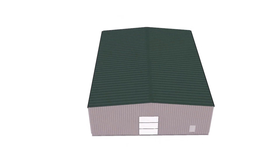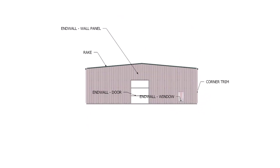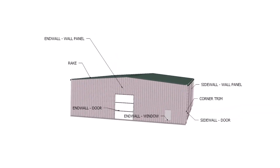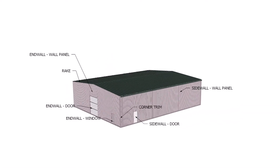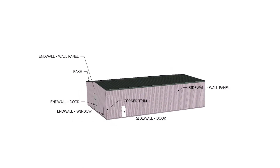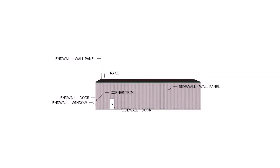Let's start at the end wall of the building. The intersection of the end wall with the gable roof is called the rake. The end walls and side walls are covered with a cladding material, and framed openings are provided for doors and windows that can be placed on any of the walls. The intersection of the end wall and side wall metal panels will be finished with corner trim.